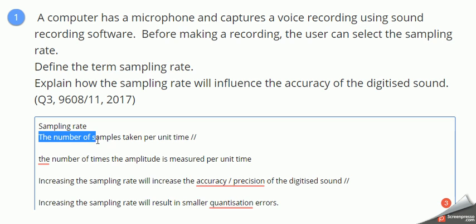Sampling rate is the number of samples taken per unit of time, or per second, or millisecond, whatever. You need to have mentioned unit of time, you need to have mentioned time somewhere in your answer. You need to have also mentioned the number of samples taken.